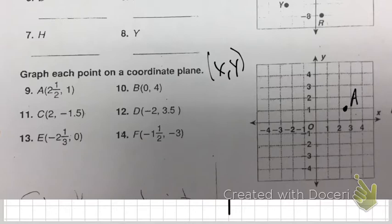So two and a half, one tells me two and a half on my X, one on my Y. That put me right there for A. I start at my origin for B. I'm not going anywhere left or right. The Y is four. Zero four is right there. So I'm going to have you do the next four and we'll get back together on those.